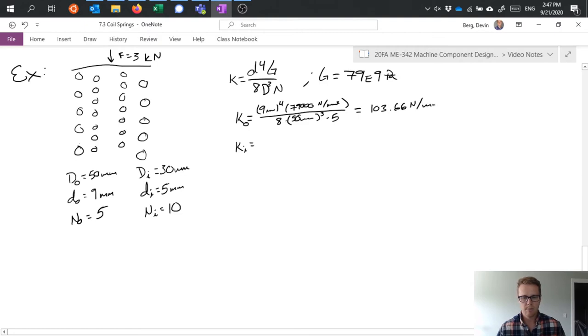103.66 newtons per millimeter. Great. So that effectively means that to compress this spring by one millimeter, it would take 103 and two thirds newtons to do that. And we can do the same thing to the inner spring. So these are basically treating the springs independently. Sorry, I'm writing my units a little sloppy here, that squiggly line is millimeters.